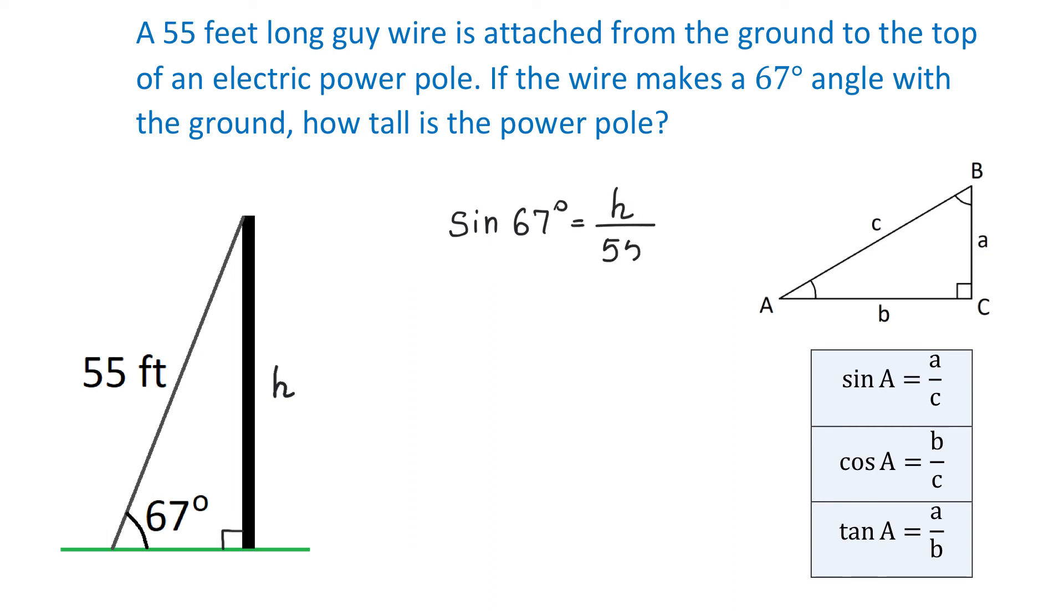To solve this problem for H, we will multiply both sides of this equation by 55. Then, on the right side, 55 will cancel and H will be equal to 55 multiplied by sine of 67 degrees. Then, we use a calculator and we will get that the height is approximately 50.6 feet.